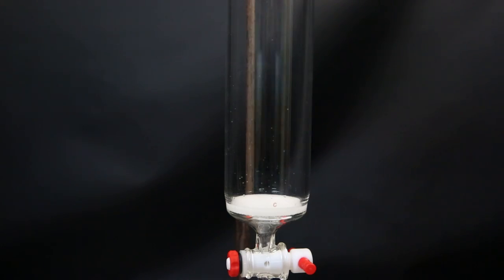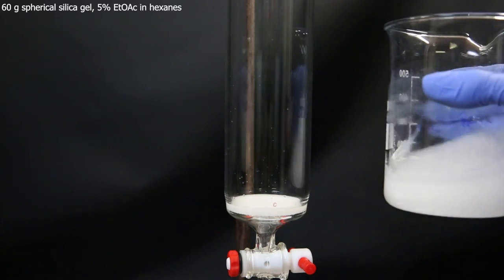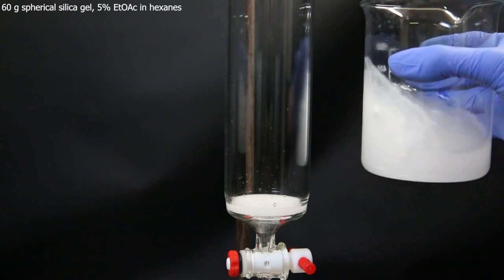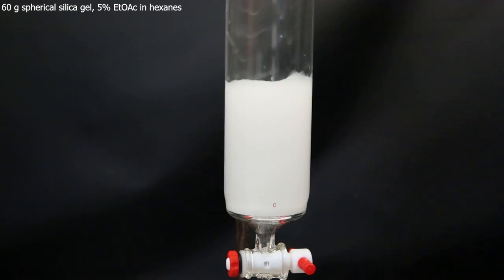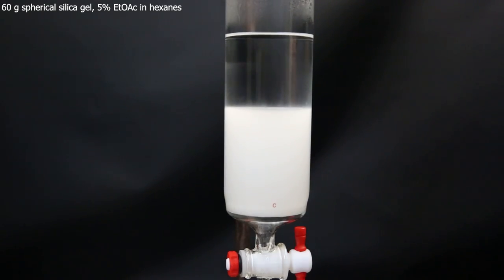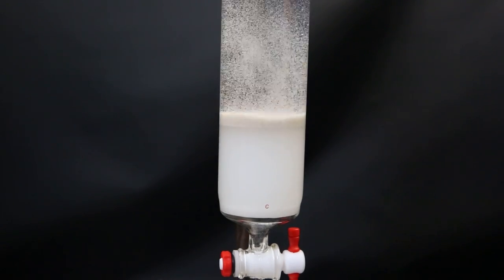Now to purify the product, I will do column chromatography. So I set up a column and add in a slurry of spherical silica gel in 5% ethyl acetate in hexanes. I wait for all of the silica gel to pack and then add a layer of sand on top.